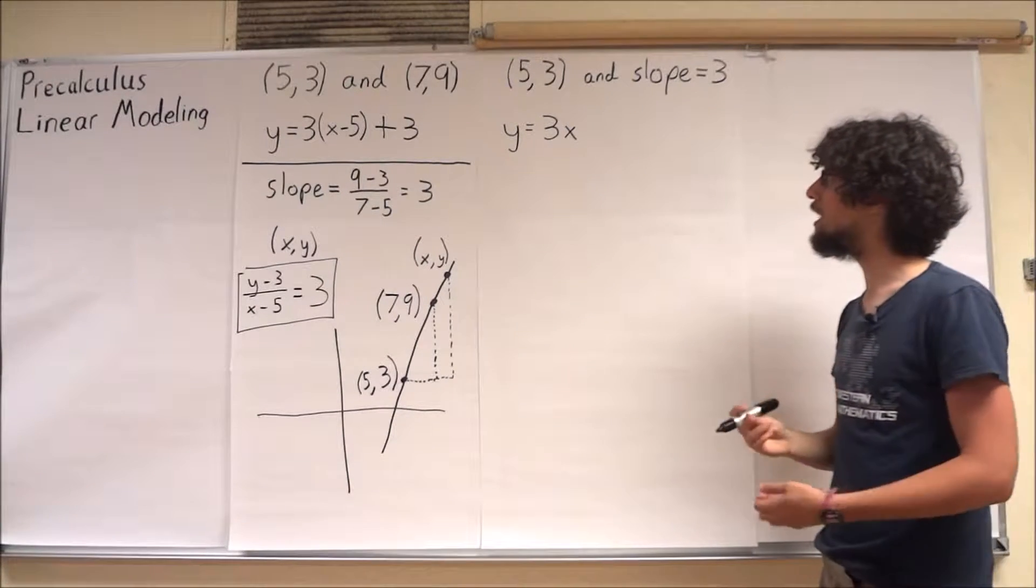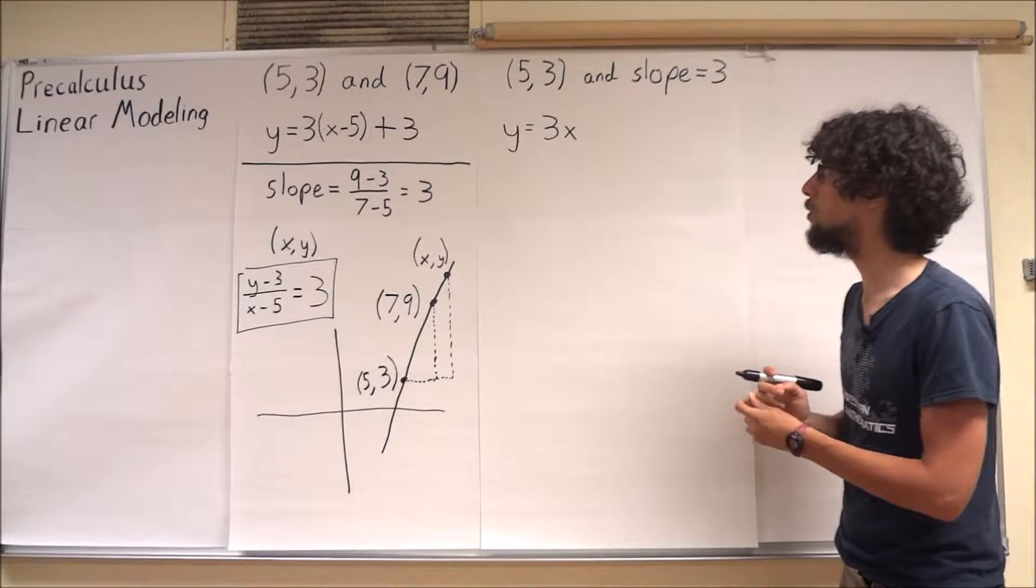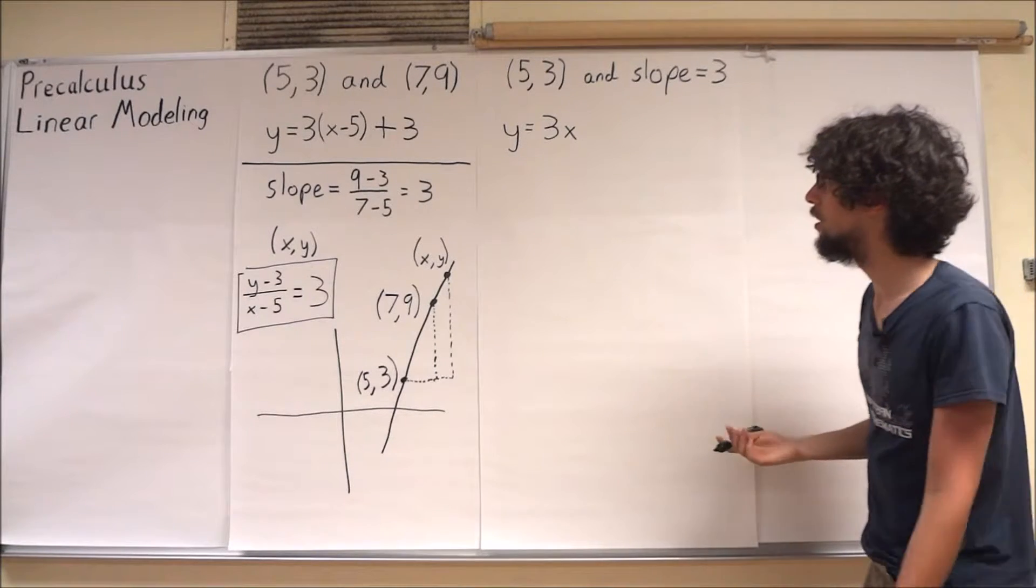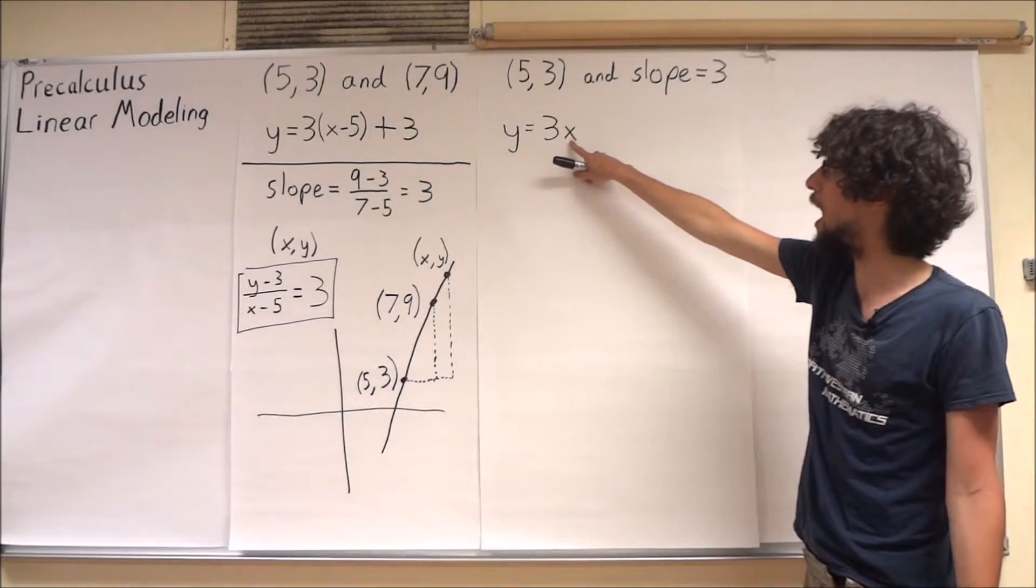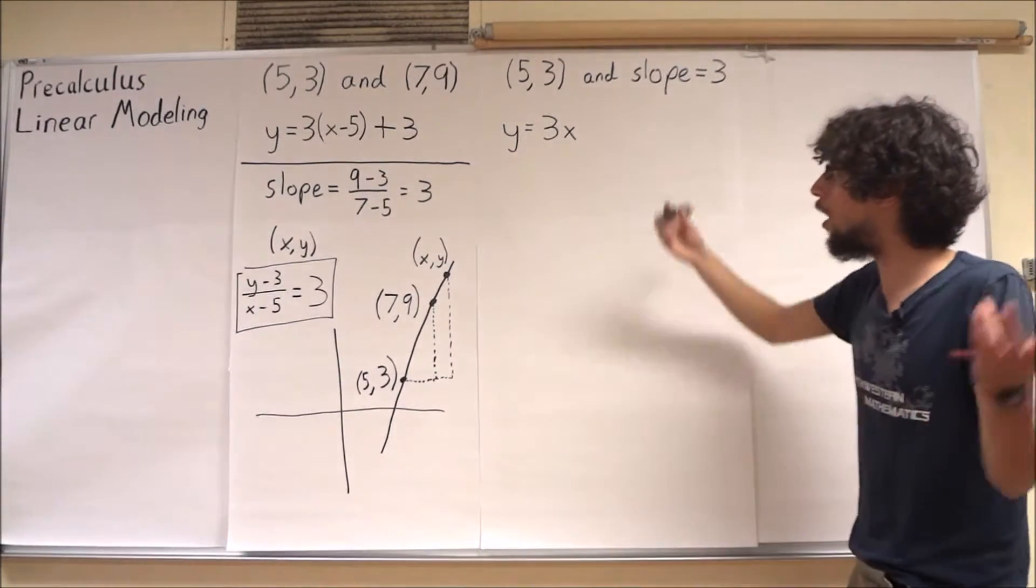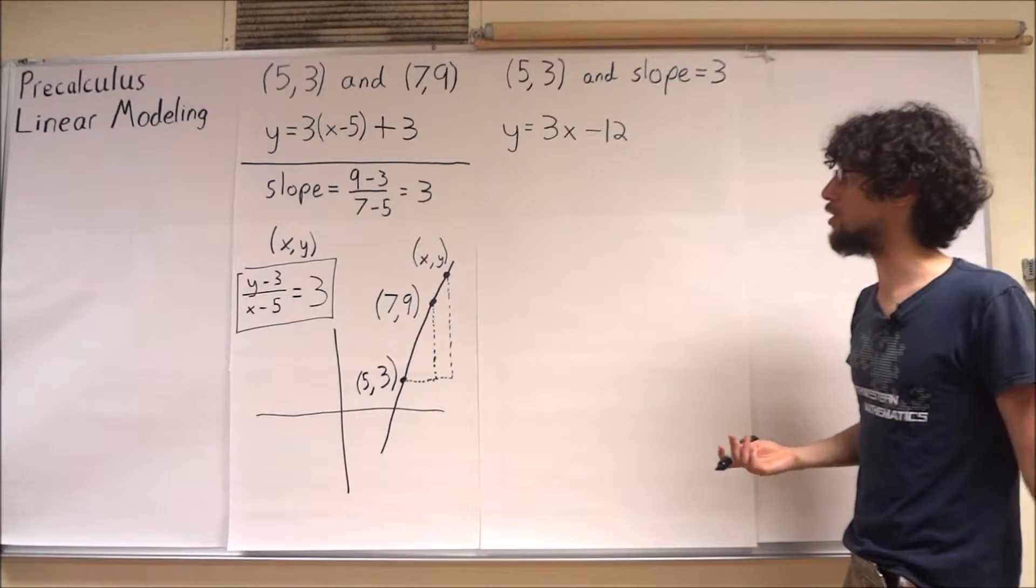And what I'd like to do now is just make sure that when I plug in x equals 5, I actually do get an answer of 3. So when I plug in x equals 5 right now, I have 15. So I'll just add a little correction factor, and this seems to work out just fine.